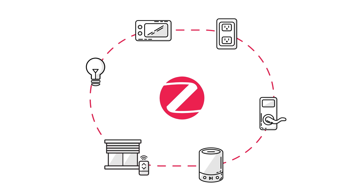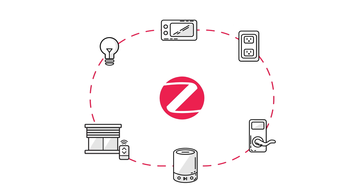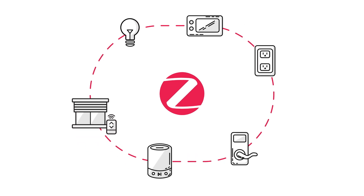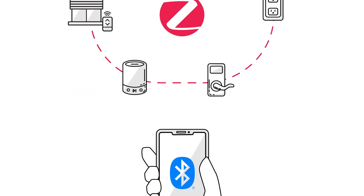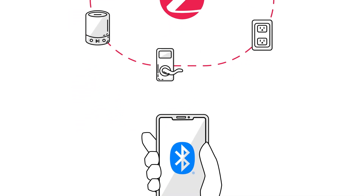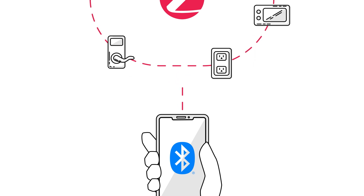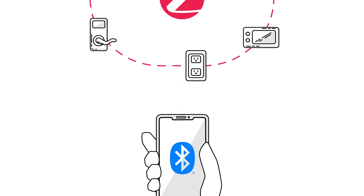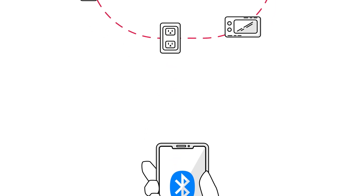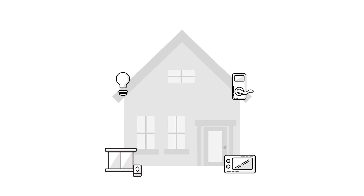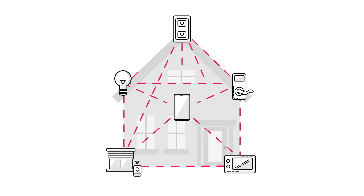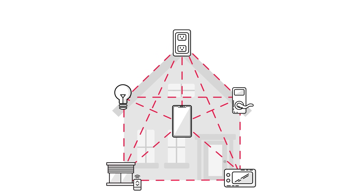Today's IoT world is also filled with Bluetooth Low Energy devices, like phones and smart speakers, that cannot directly communicate to the large ecosystem of Zigbee devices. As the IoT evolves,